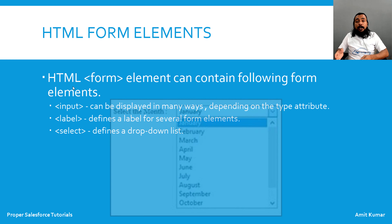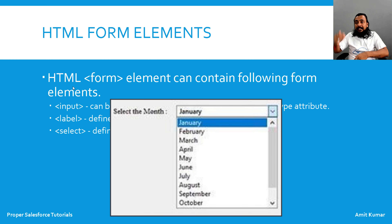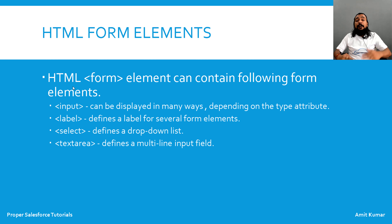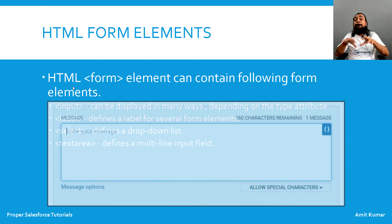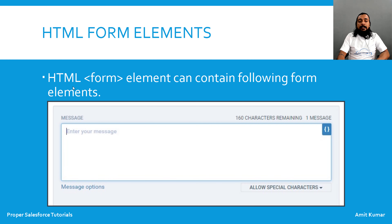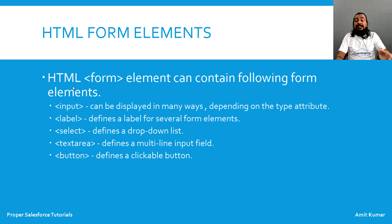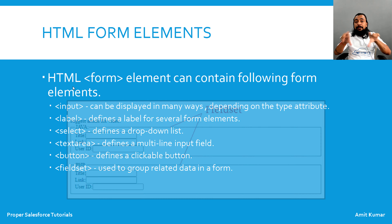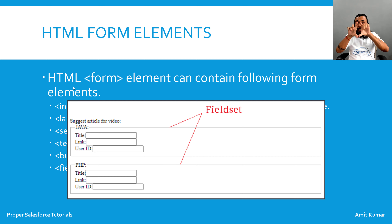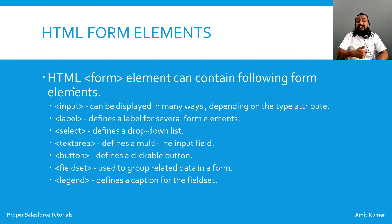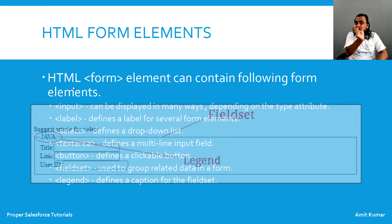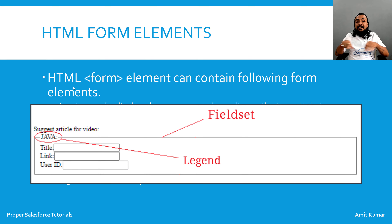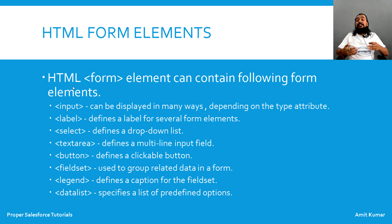Select is used to provide a drop-down list or combo box where you click and it converts into a list from where you can select any value. Textarea is used for a multi-line input field when you are providing a paragraph rather than a single statement. Button is a clickable button you can provide inside your form. Fieldset is used to group related data in a form, and legend is used with fieldset to provide a caption to that fieldset.